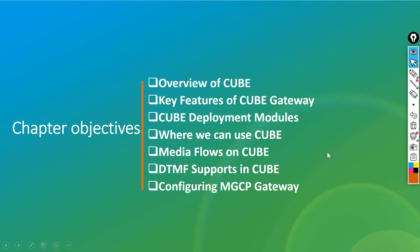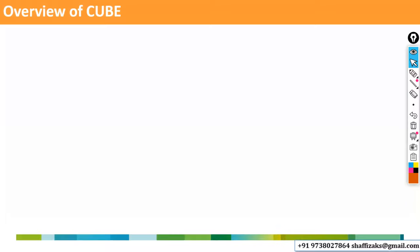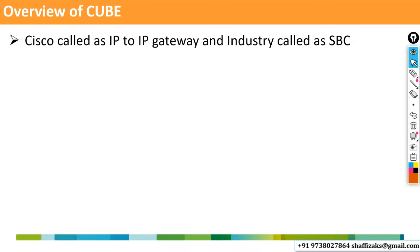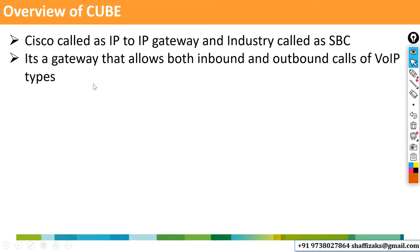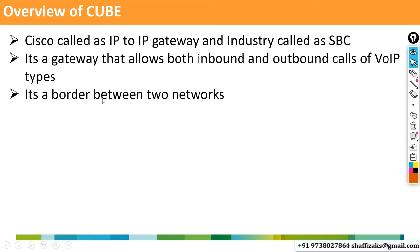Let's look into the overview of the CUBE. CUBE stands for Cisco Unified Border Element. Cisco calls it an IP-to-IP gateway, and the industry calls it an SBC — Session Border Controller. Other vendors call it SBC, but in Cisco we call it IP-to-IP gateway. It's a gateway that allows both inbound and outbound calls of VoIP types. Both ends have IP addresses — it's a border between two networks.